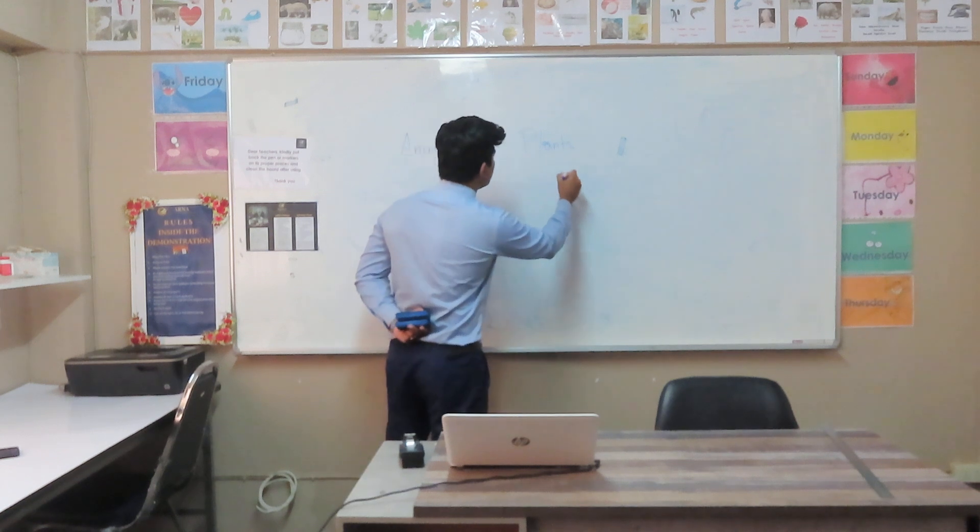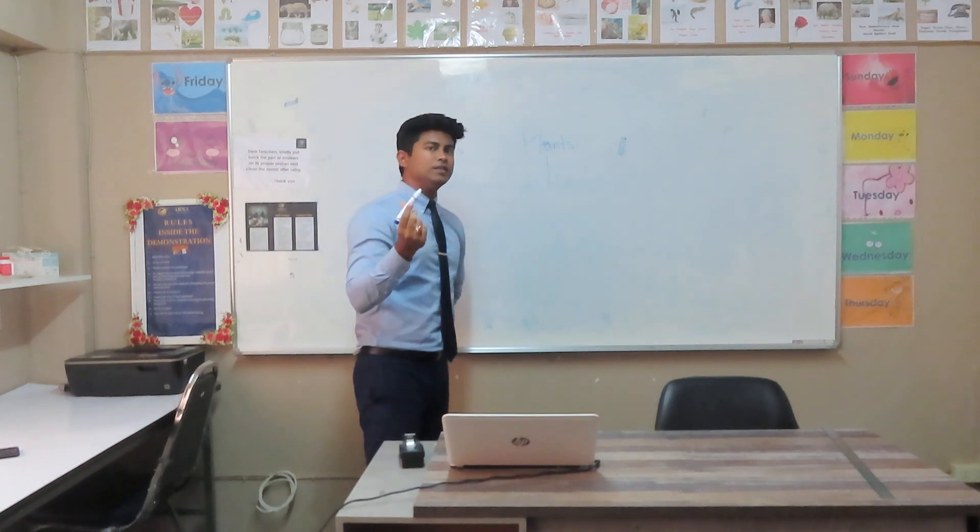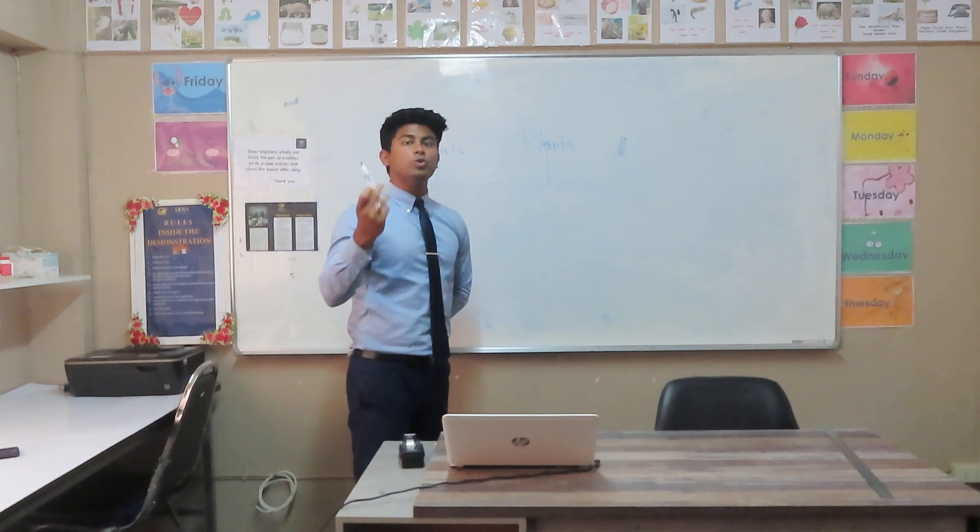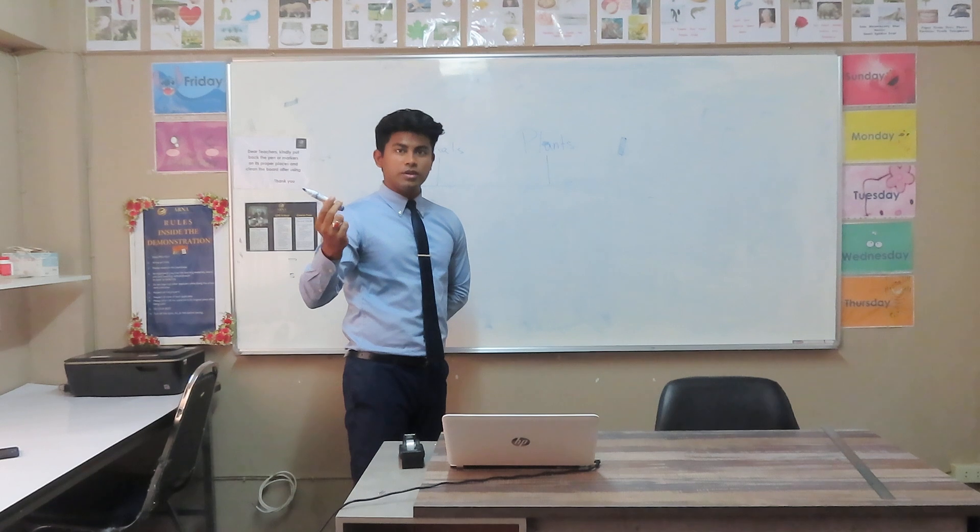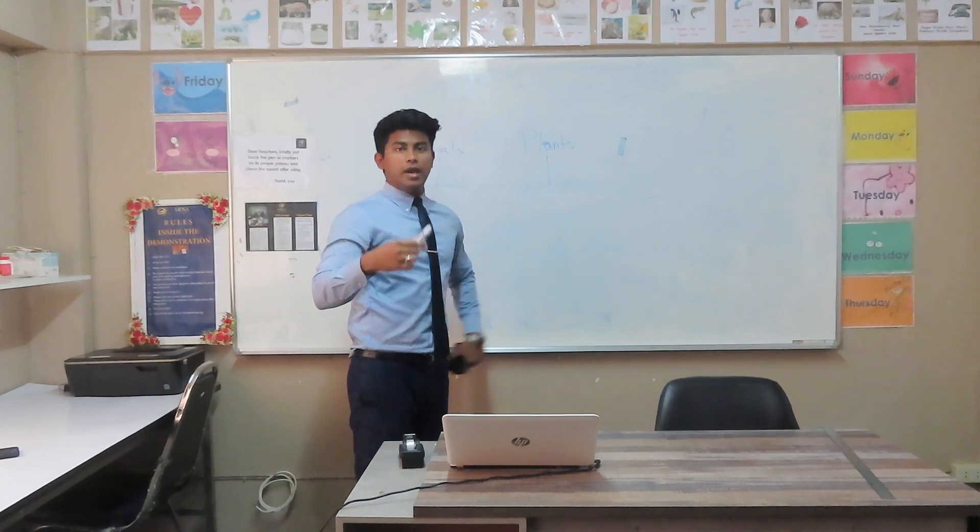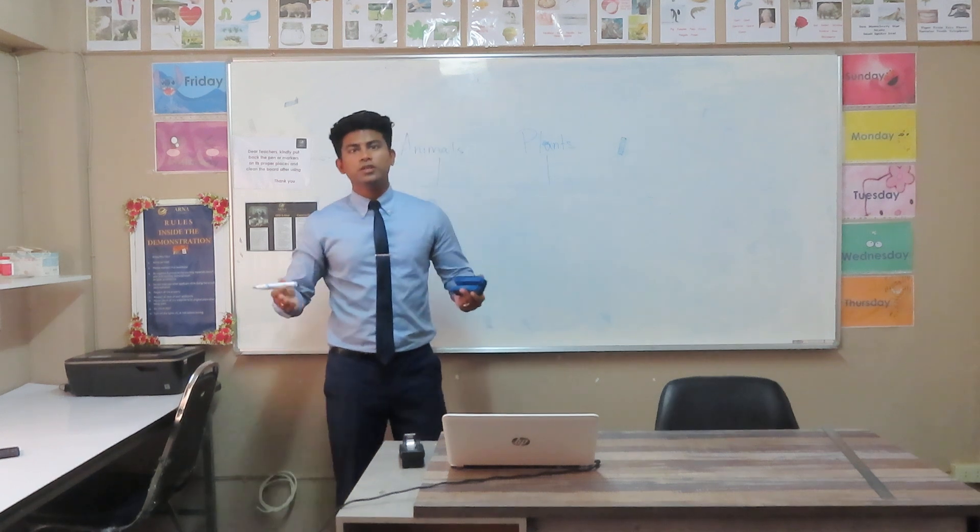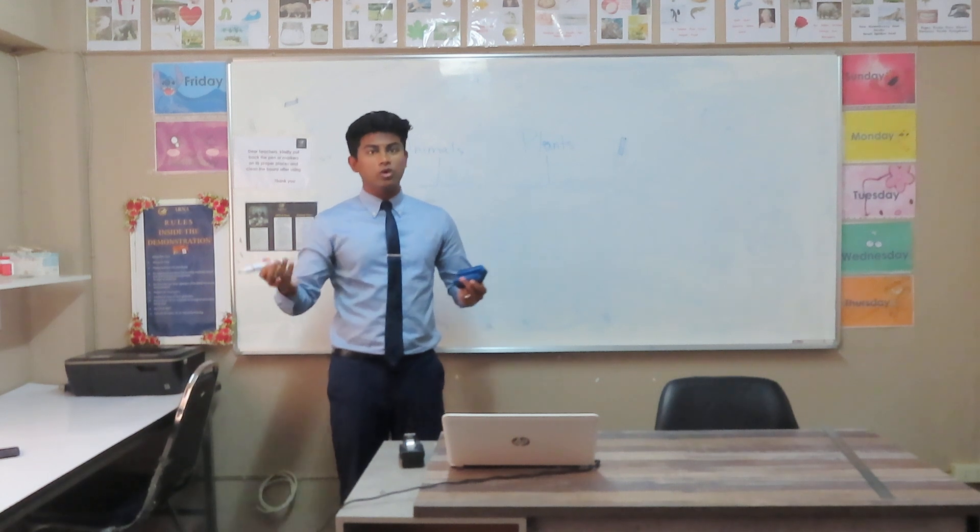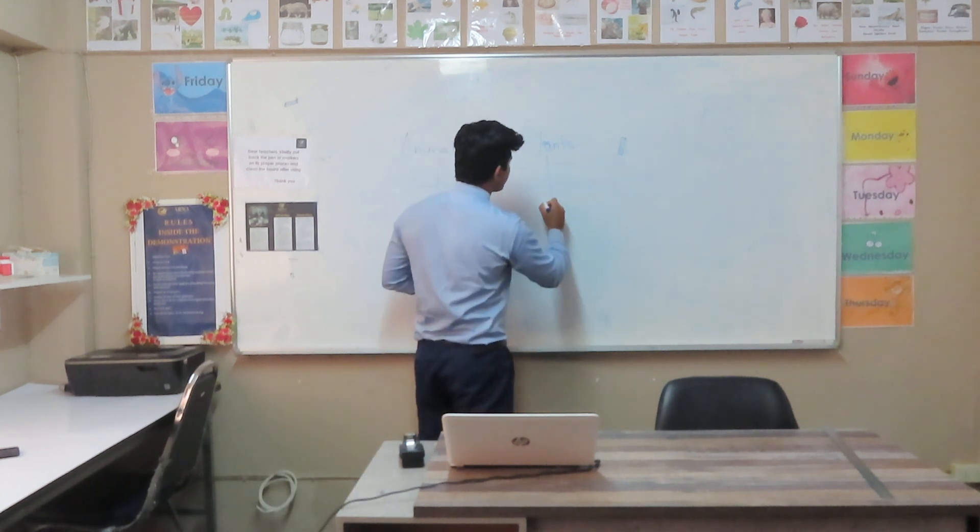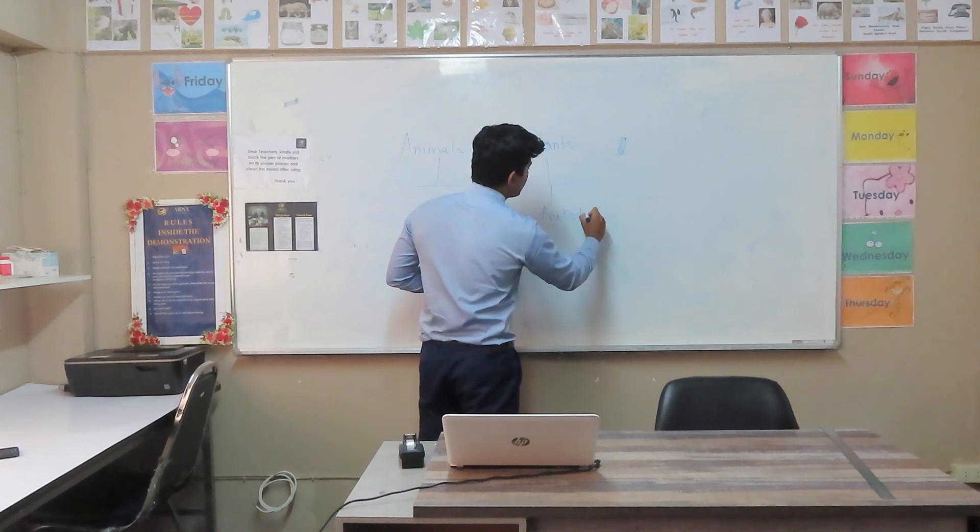First of all, the most important difference when we talk about plants: Plants are known as autotrophs. What are plants known as? Autotrophs. Can you spell autotrophs? A-U-T-O-T-R-O-P-H-S. Autotrophs.